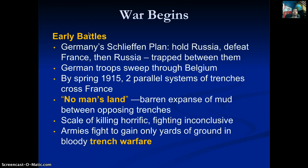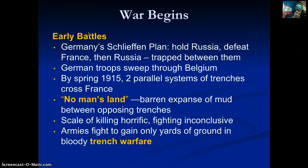When Germany attacks France, something unexpected happens: both sides dig parallel systems of trenches and shoot across at each other. In between is No Man's Land — bombed out, barren mud that nobody survives crossing. The scale of killing is horrific: 4,000 men might be killed just to gain 20 yards — not even half a football field. One side charges out of the trench, suffers heavy casualties from machine guns, then the other side launches an attack with the same result. A lot of life lost, very little territory gained.